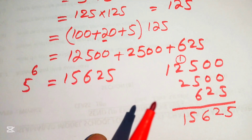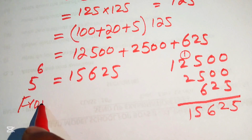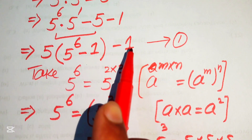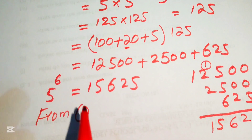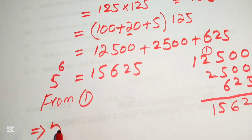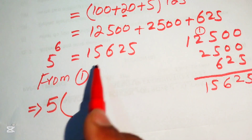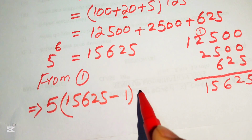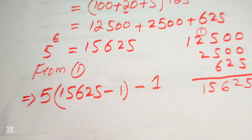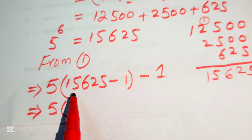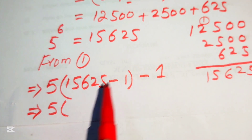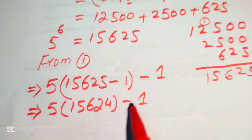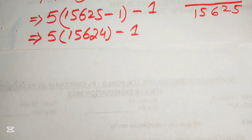We now substitute this value into equation 1. Equation 1 is: 5 times (5 to the power of 6 minus 1) minus 1. Substituting the value of 5 to the power of 6 as 15625, we get: 5 times (15625 minus 1) minus 1. Subtracting 15625 by 1 gives us 15624, so the expression becomes 5 times 15624 minus 1.